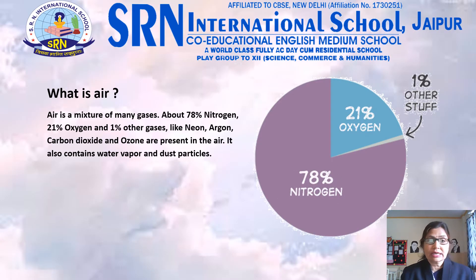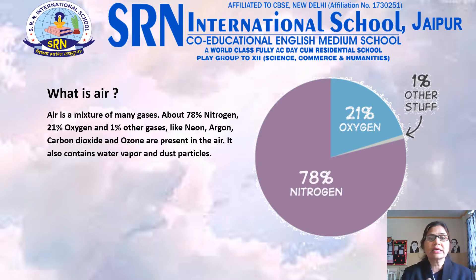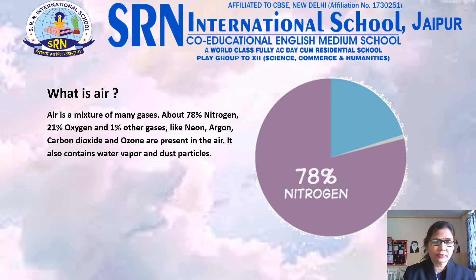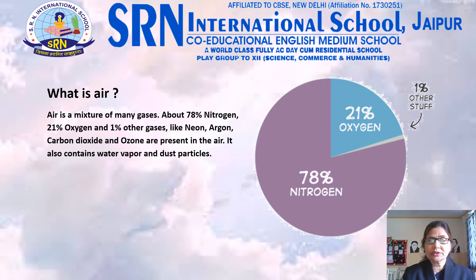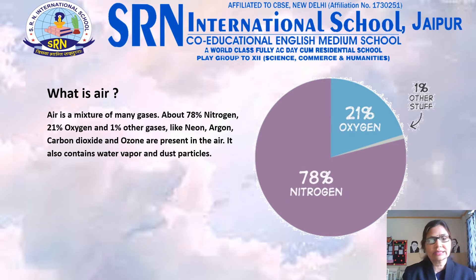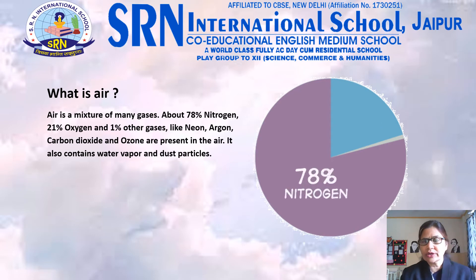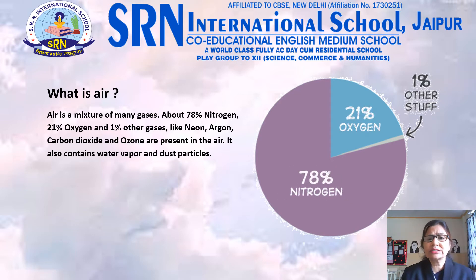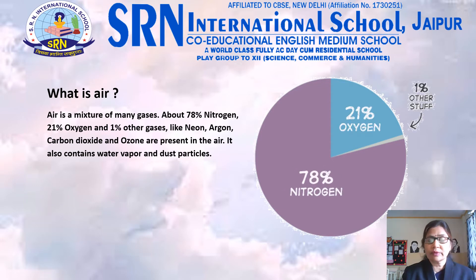Now the question arises: what is air? Air is a mixture of many gases — about 78% nitrogen, 21% oxygen, and 1% other gases like neon, argon, carbon dioxide, and ozone. It also contains water vapor and dust particles.